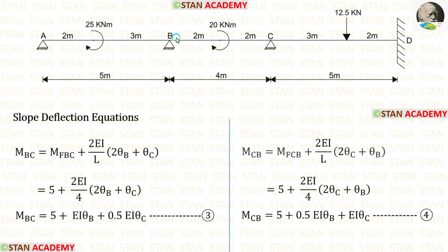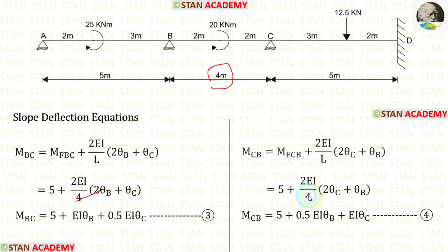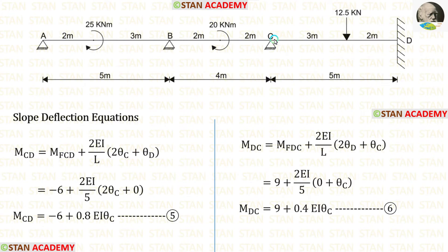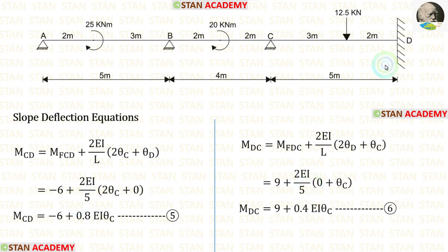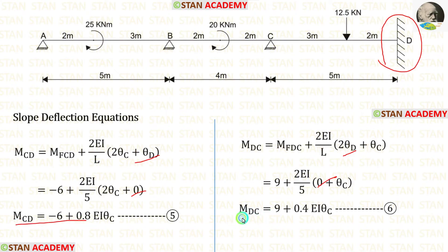Now let us write the slope deflection equations for span BC. We apply the fixed end moments and the length of BC, which is 4 m, giving two equations. Then for span CD, we apply the fixed end moments and the length of 5 m. At point D there is a fixed support, so theta D equals 0. This gives us two more equations.